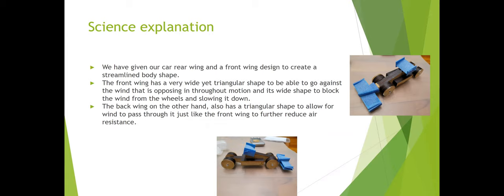Now the back wing, on the other hand, has a triangular shape to allow wind to pass through it, just like the front wing, which helps to further reduce air resistance and result in quicker speed.